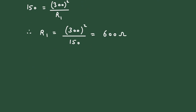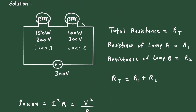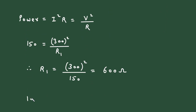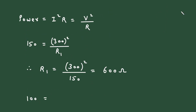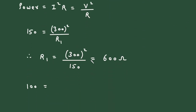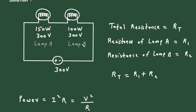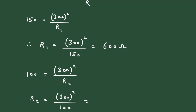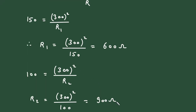Next, for lamp B, power is 100 Watt. So 100 = V²/R2. The voltage value is the same, that is 300 V. So 100 = 300² / R2, which means R2 = 300² / 100 = 900 ohm.